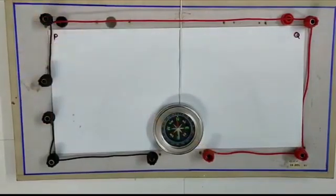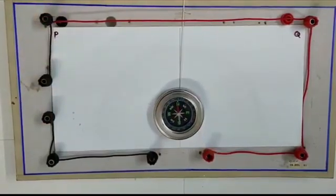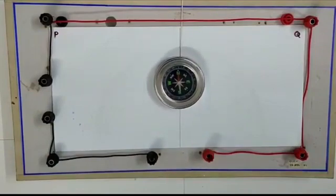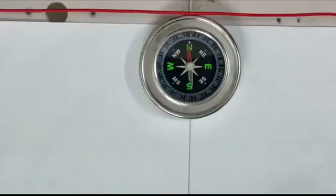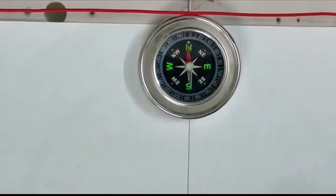Here the battery is not connected to the circuit. Now observe the effect of magnetic needle when there is no current passing through the wire and note down your observation.